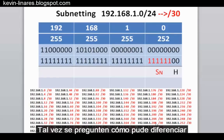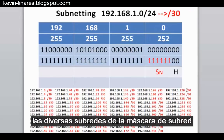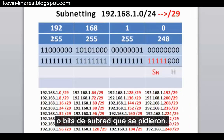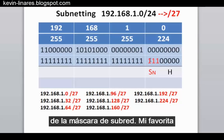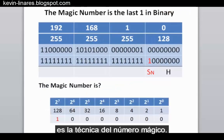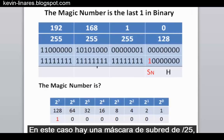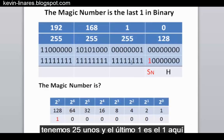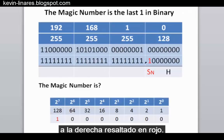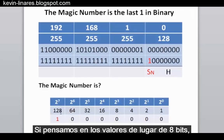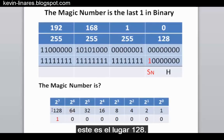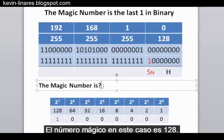You might ask how to discern the different subnetworks from the subnet bits borrowed. There are many ways, but the favorite is the magic number technique. The magic number is simply the place value of the last one in the subnet mask. For a slash 25 subnet mask with 25 ones, the last one highlighted is in the 128th place of its octet. So the magic number in this situation is 128.